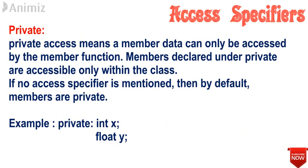Now let us understand the private access specifier. Private access means a data member can only be accessed by the member functions of that class. Member functions declared under private are accessible only within that class. If an access specifier is not declared, by default it is considered as private.